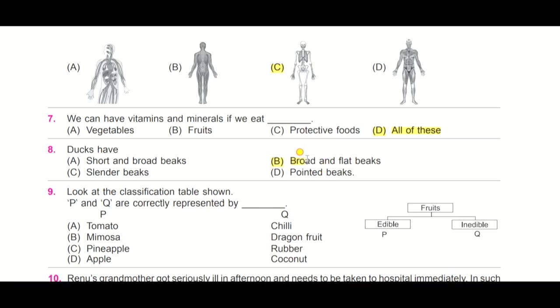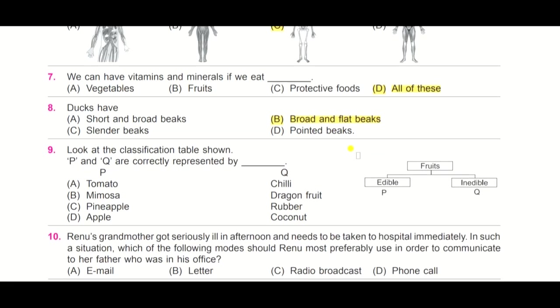Answer is B, broad and flat beaks. Question number nine: look at the classification table shown. This is a classification table. Fruits edible is indicated by P and inedible is indicated by Q. P and Q are correctly represented by what? Here under P we have tomato, mimosa, pineapple, apple, and Q has chili, dragon fruit, rubber, coconut.